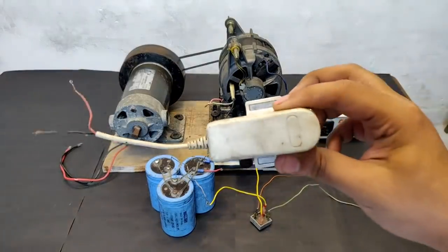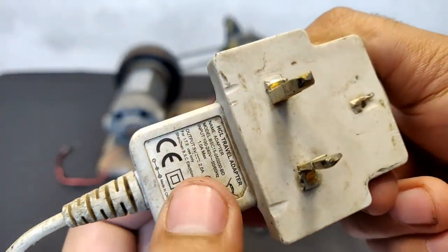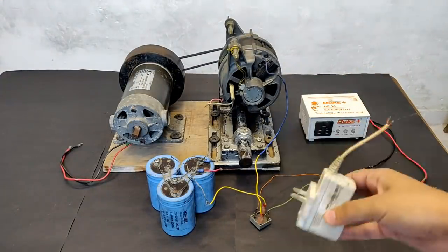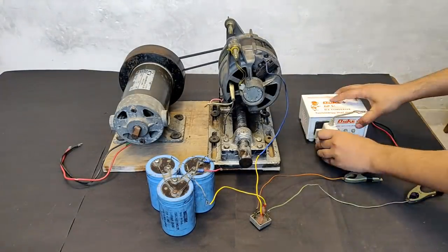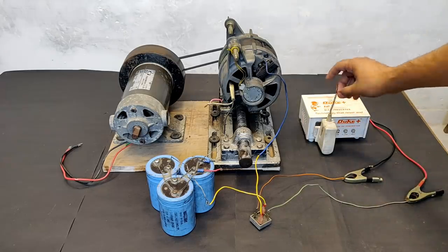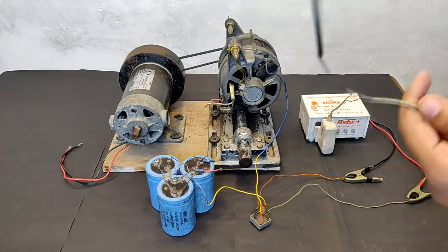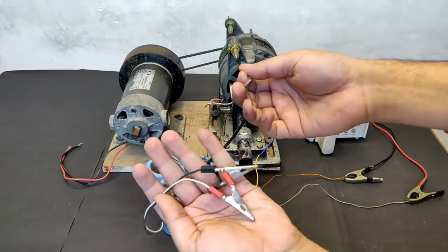Now comes this 5 volts, 2 amperes mobile charger. You see, 5 volts, 2 amperes. So I have to connect it to the inverter. Connected. Now, there are two left out pins, black and red, to which I'm going to connect this extension.